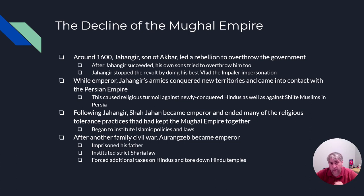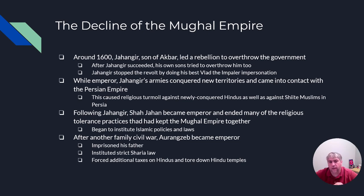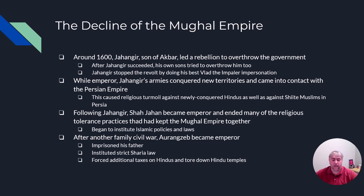Shahangir is well-educated and could speak four languages, but he's more interested in drinking and gambling than being a good ruler. While Shahangir is busy having fun, his wife — a woman named Nur-Jahan — ends up taking control of the government and appoints many of her own male relatives to government posts. After Shahangir's death, his son Shah Jahan becomes emperor and throws his mother Nur-Jahan into prison.